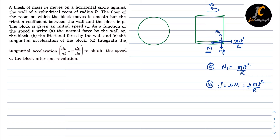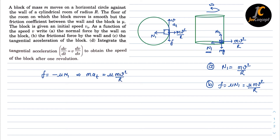For part (c), the tangential acceleration of the block — let's observe this scenario from the top view, where this is the cylinder and the object is placed here. The velocity is in this direction, so the tangential acceleration is also along v. The frictional force acts in the opposite direction of v, and mv²/r acts inward while N1 acts outward. So the frictional force equals minus mu times N1, with the minus sign because it acts against v. Therefore, m times at equals minus mu times N1, which equals minus mv²/r.